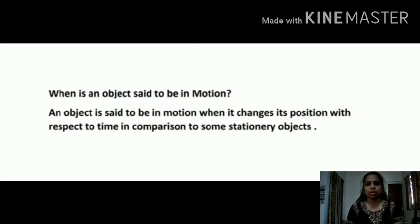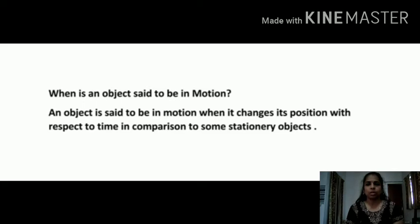Let's start the new chapter Motion and Time. When is an object said to be in motion? An object is said to be in motion when it changes its position with respect to time in comparison to some stationary object in its surroundings. With respect to time, and the surroundings with which we have to compare — these two are very important terms.